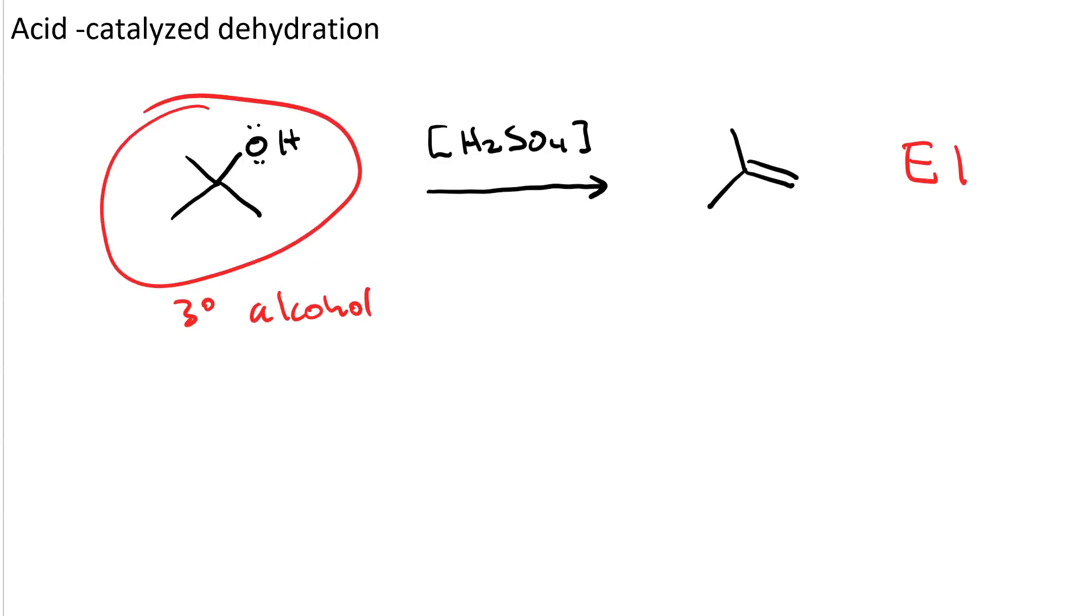Of course, another thing we can do with alcohol is acid-catalyzed dehydration. So we take our tertiary alcohol, in this case t-butanol, and we react it with concentrated sulfuric acid. We could also use phosphoric here. So if you see bracket H3PO4, that also means acid-catalyzed dehydration. Of course, your substrate has to be an alcohol. And you get an alkene. And since it's tertiary, it goes E1.